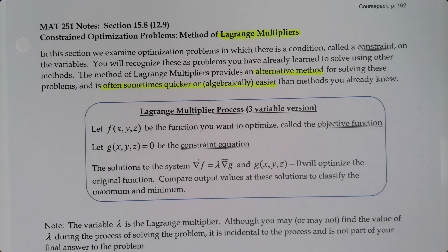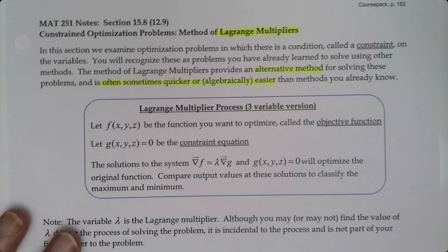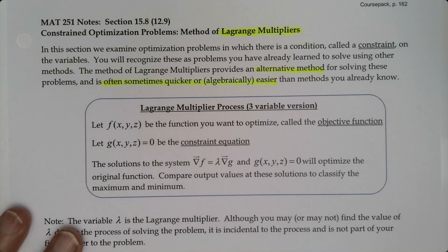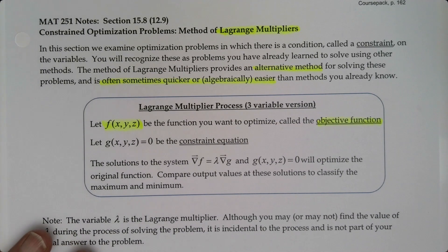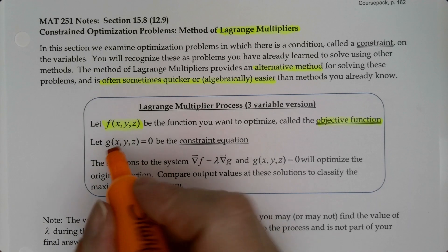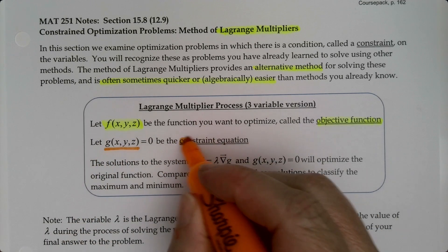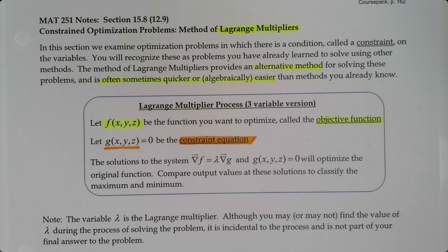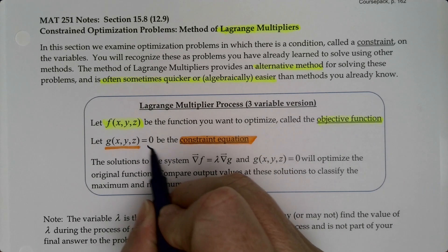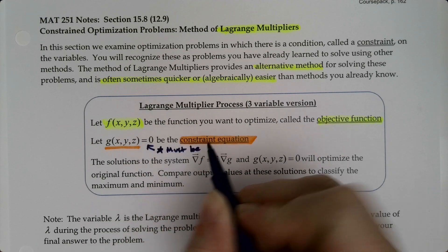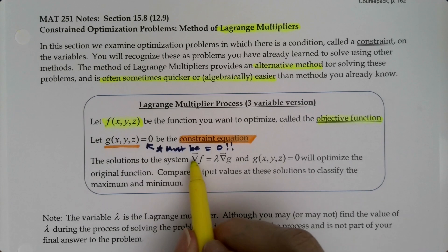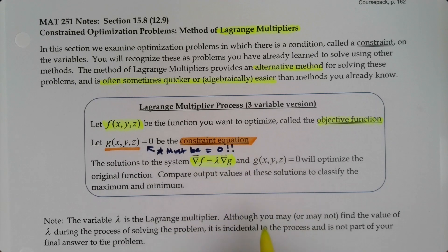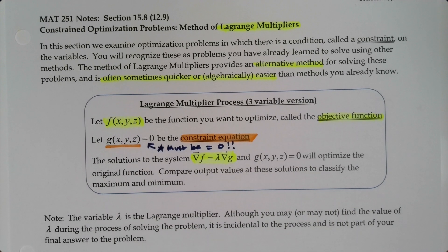It's just a different way to do it. So we have f of xyz as the function we want to optimize — that's the objective function, language we ran into in the previous section and in Calc 1. And g of xyz is the constraint equation, the constraint under which we want to optimize the objective function. The constraint must be equal to zero — that is key for the method of Lagrange multipliers to work. The solution to the system: the gradient of f equals lambda times the gradient of g, and g of xyz equals zero, will optimize the original function.